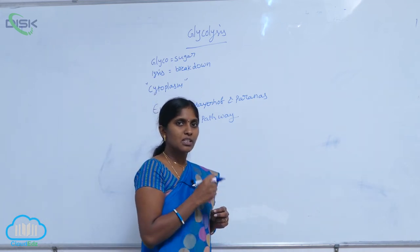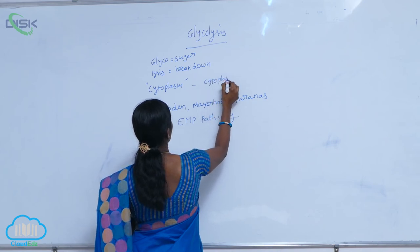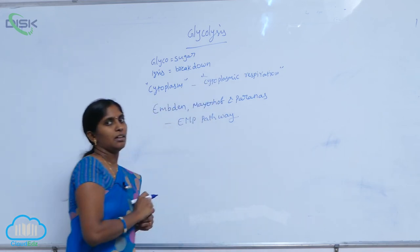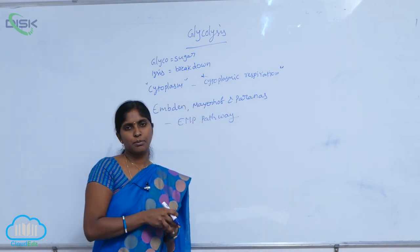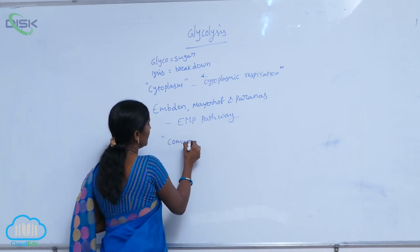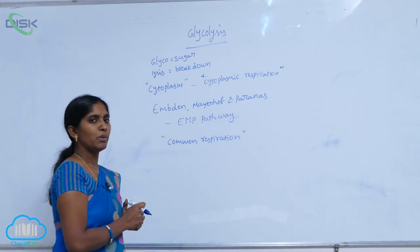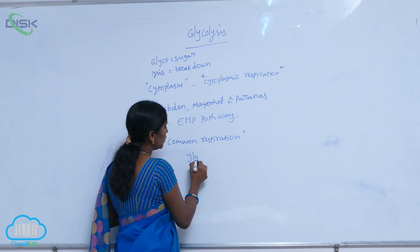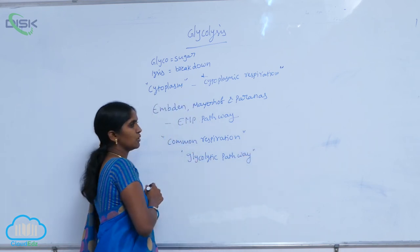Since glycolysis is carried out in the cytoplasm, it is called cytoplasmic respiration. It is also common to both aerobic and anaerobic respiration, which is why it is called common respiration. Glycolysis is also referred to as the glycolytic pathway. These are all synonymous terms for glycolysis.